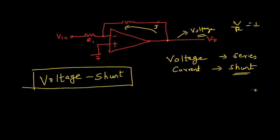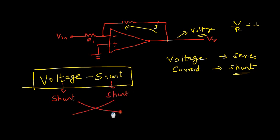It can also be renamed. Rename voltage as shunt and shunt as shunt, then interchange it — it will become shunt shunt.